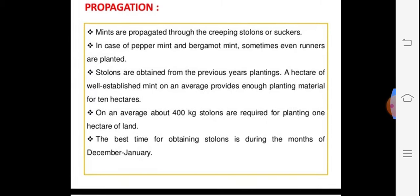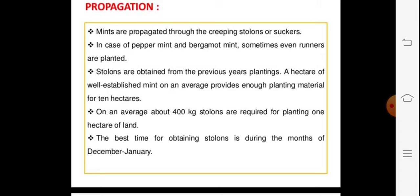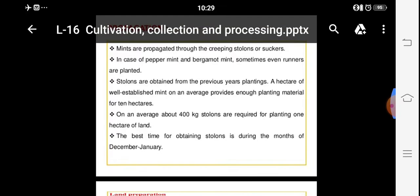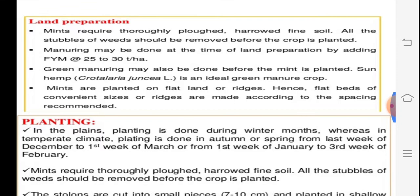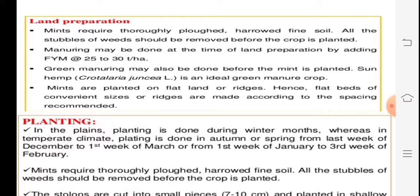Mentha is propagated by creeping stolons or suckers. Runners or stolons are required at about 40 kg per hectare for plantation. The best planting time is December to January for peppermint. For land preparation, the soil is harrowed to remove weeds, stones, and other materials. Farm yard manure (FYM) at 20–30 tons per hectare is added, and green manuring using Crotalaria or similar species is also important.